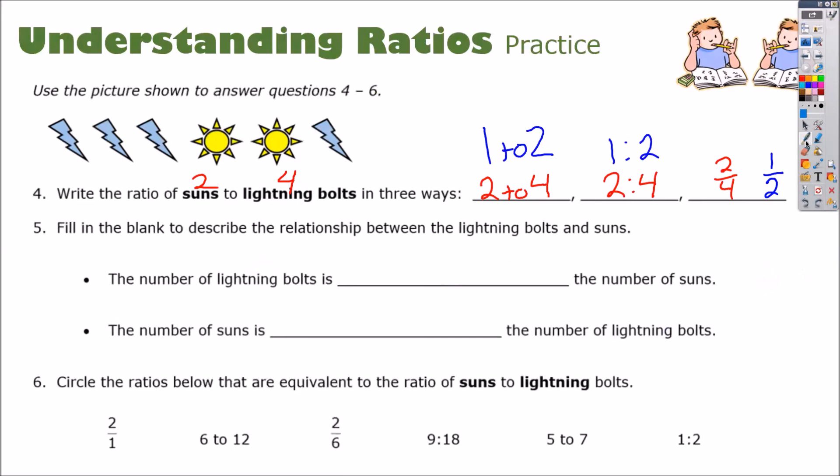Okay. So now let's do this one. The number of lightning bolts. Lightning bolts was 4 to the number of suns, 2. And if I put this over here, it's 4 over 2, and we know that's simplified down to 2 over 1, which was twice. Twice or 2 times. Now below, the number of suns is blank the number of lightning bolts. So it's 2 over 4, which we know is 1 half. That's exactly what you write down. Half. The number of suns is half the number of lightning bolts.